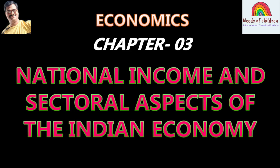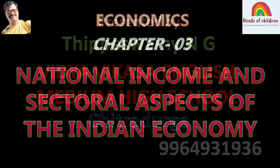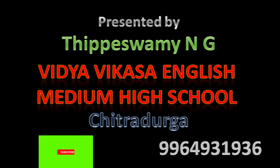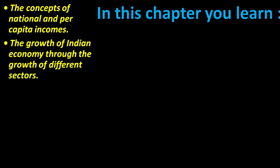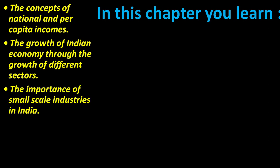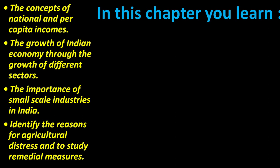Welcome back to Needs of Children. We are discussing 8th standard English medium Social Science — Economics Chapter 3: National Income and Sectoral Aspects of the Indian Economy. The important learning points from this chapter include: concepts of national and per capita incomes, the growth of the Indian economy through different sectors, the importance of small scale industries in India, and identifying reasons for agricultural distress and remedial measures.